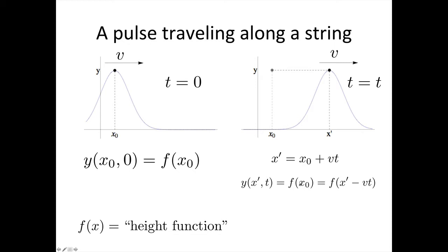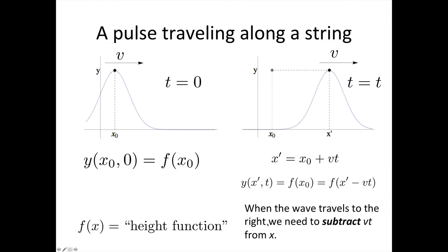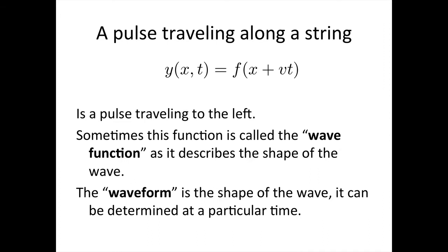Now we do a little mathematical trick: x₀ from this expression equals x' minus vt. So we replace x₀ with x - vt. This is important — it shows that as the wave moves forward, to get the height from the function we consider where it was at the earlier time. That's why we have that negative sign. When the wave travels to the right, we need to subtract vt from x, and that's why we have that negative sign in the equation to describe a wave.